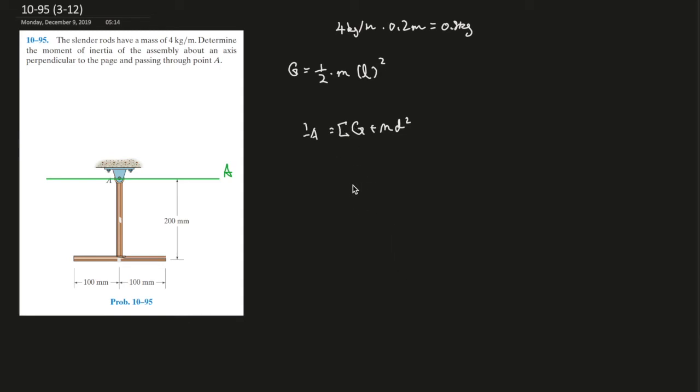First it would be half times mass, so 0.8, times the distance. Let's do this beam over here first, the vertical beam. The length is 0.2 squared, plus the mass 0.8 times the distance. What is the distance from here to the centroid is 0.1, times 0.1 to the power of 2.